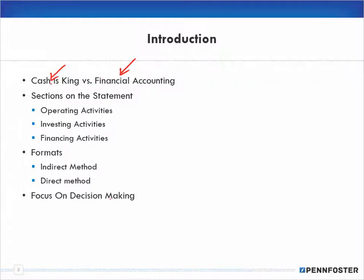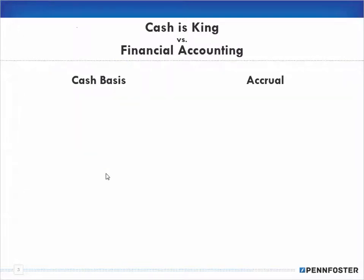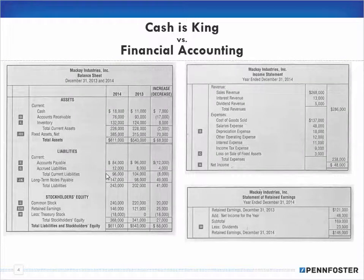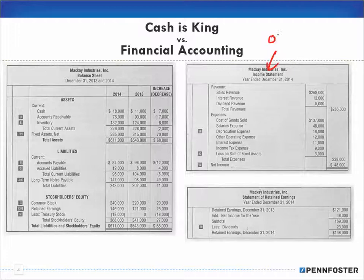We're taking our accrual and adjusting to our cash position. To do that, we create our statement of cash flows, which has three sections: operating activities, investing activities, and financing activities. We also talk about the different formats — the indirect method and the direct method. As a general overview, the income statement relates to our operating activities.